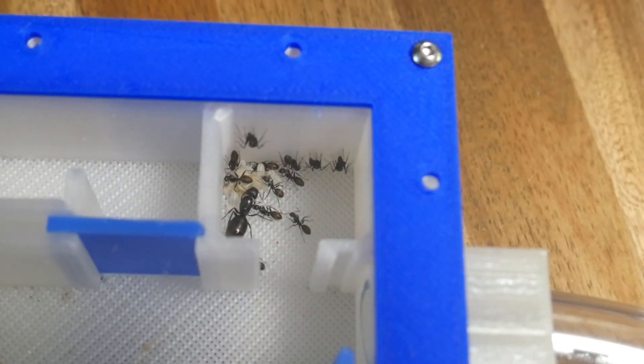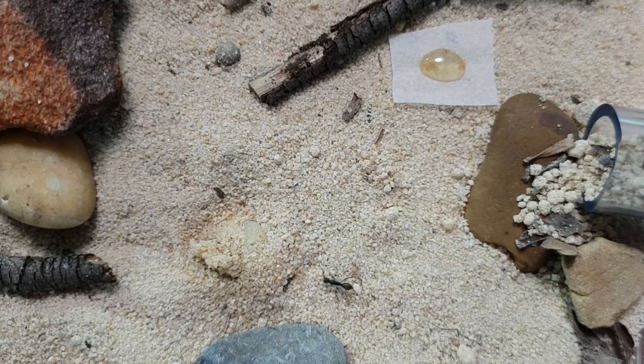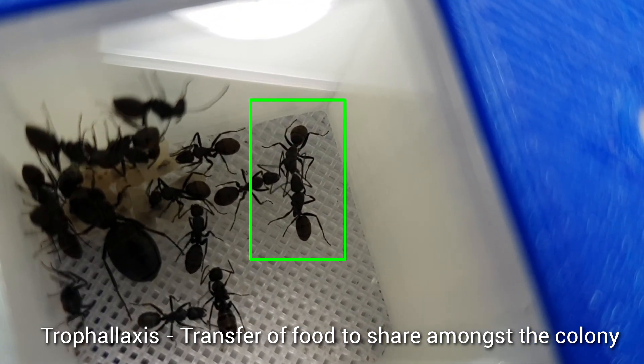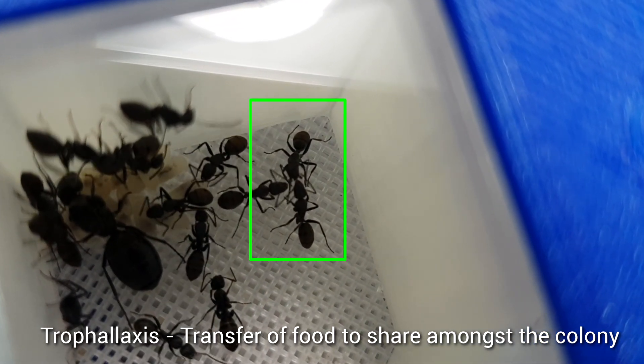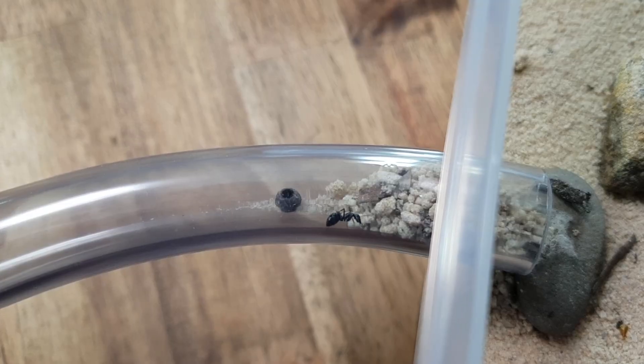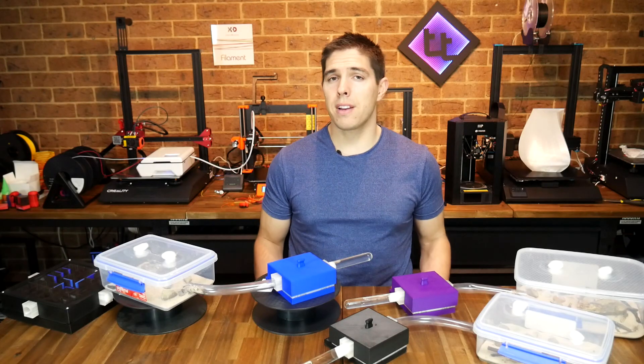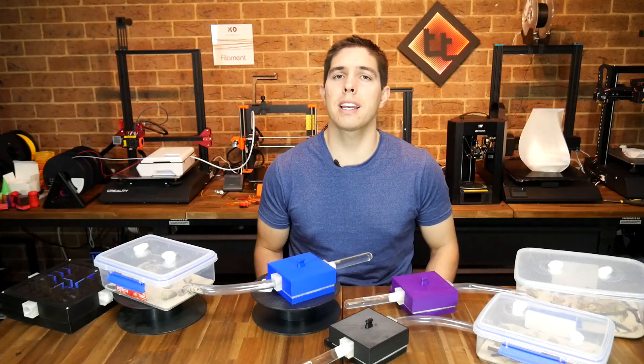Whether it be watching the queen protect her brood, seeing the worker ants venture out into the outworld looking for food, and then seeing them come back to the nest where they regurgitate it to share it around, and even just the little things like watching them build up the entrance to the outworld and then standing guard. Ants are pretty fascinating creatures when you stop and take the time to look.